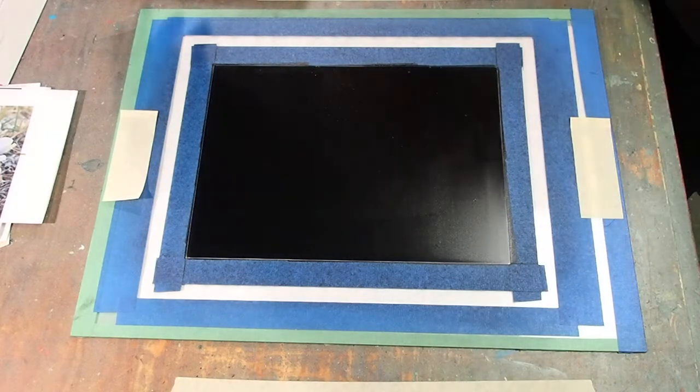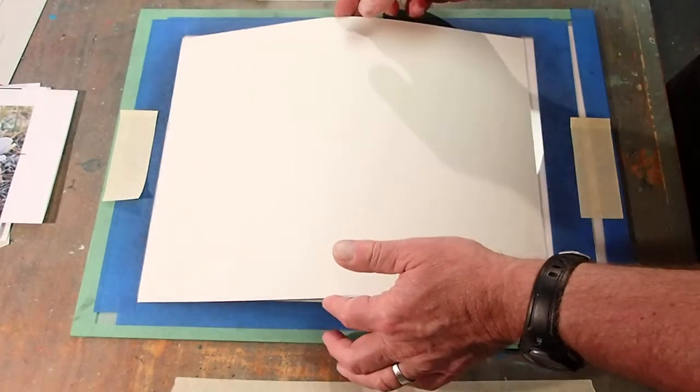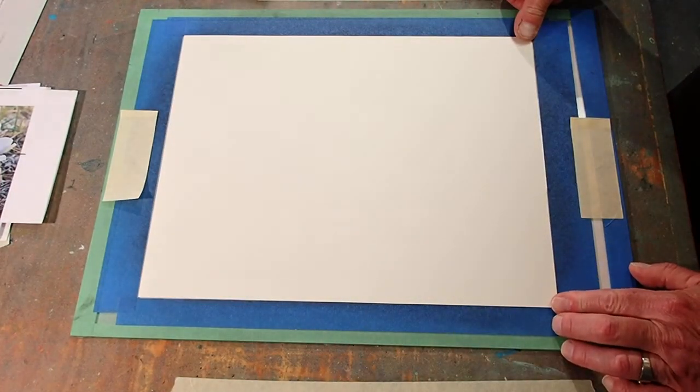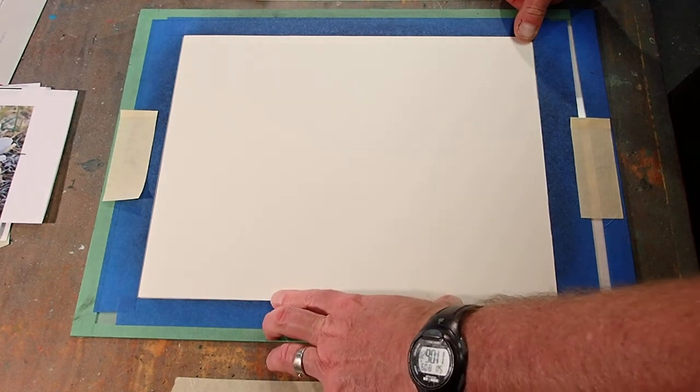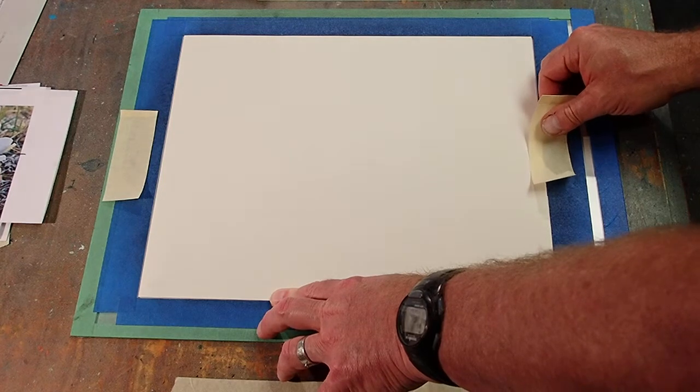I'm going to put paper over that ink and then I'm going to draw and rub on the back of that paper transferring ink to the front. First thing I'm going to do is tape it down so it doesn't move.